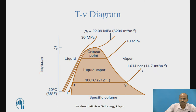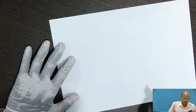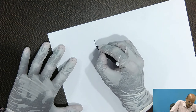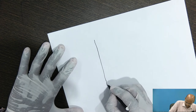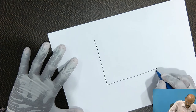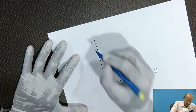Mollier's chart or diagram is very useful for solving the numericals for steam nozzle. Mollier's diagram is plotted on specific enthalpy versus specific entropy chart. On the x-axis there is specific entropy, and on the y-axis there is specific enthalpy.